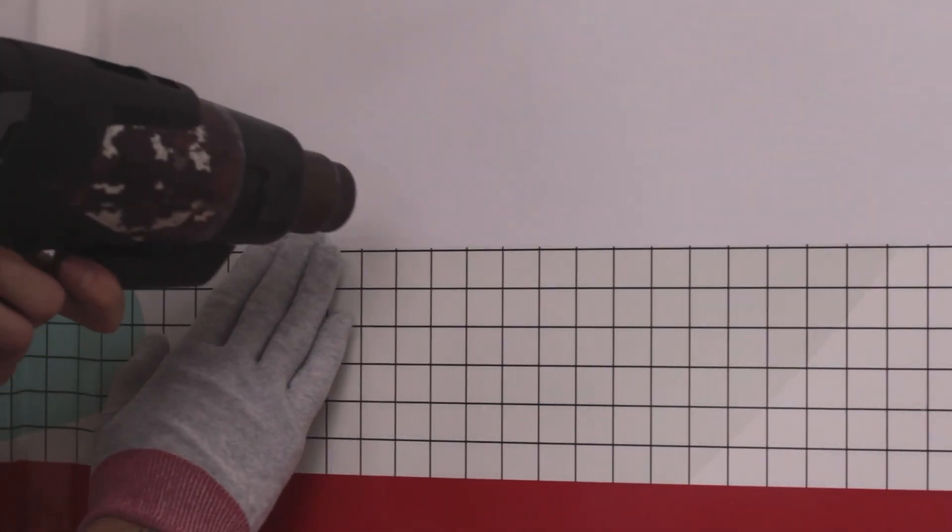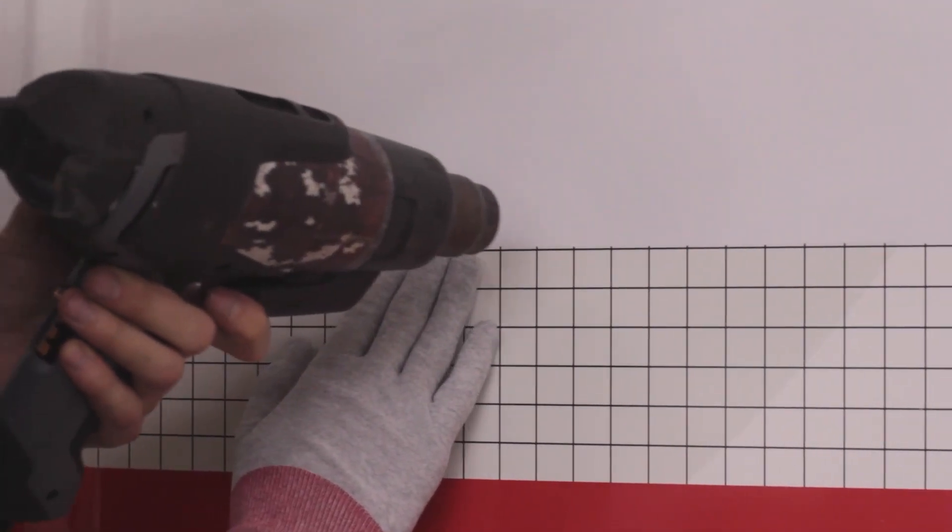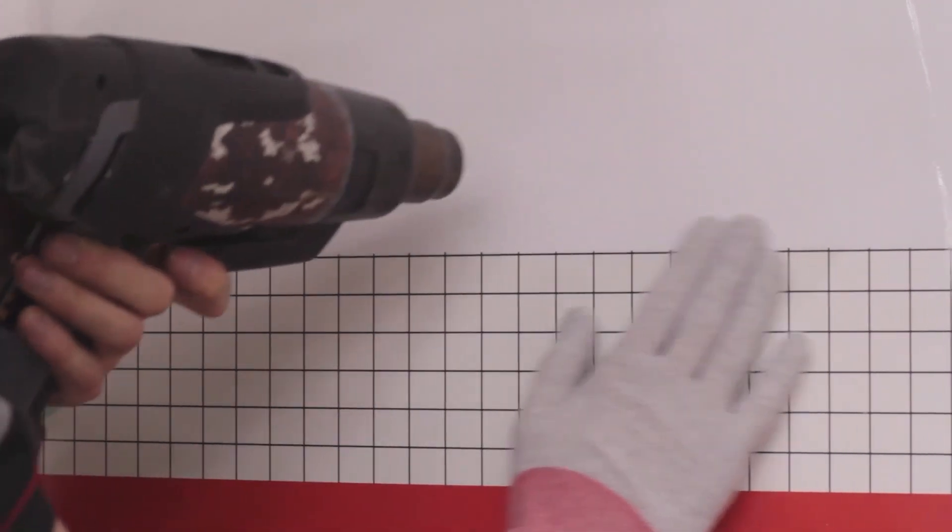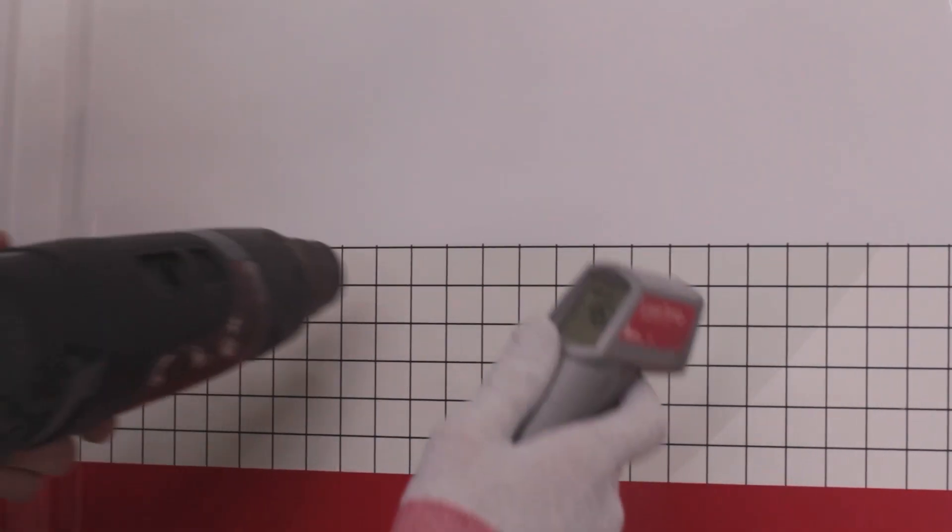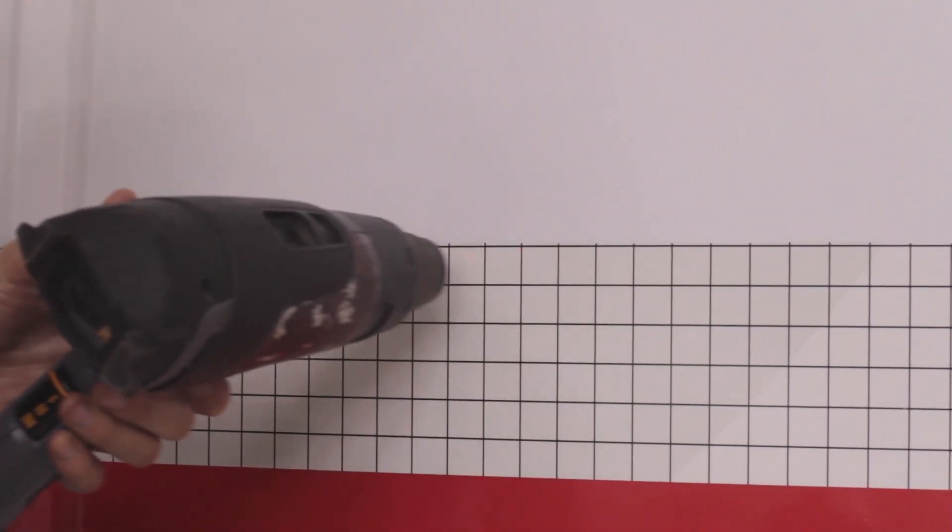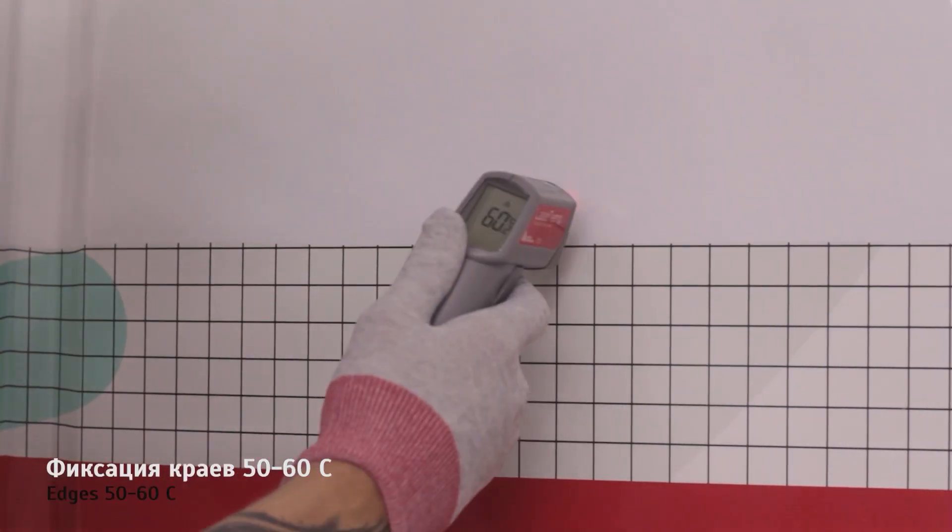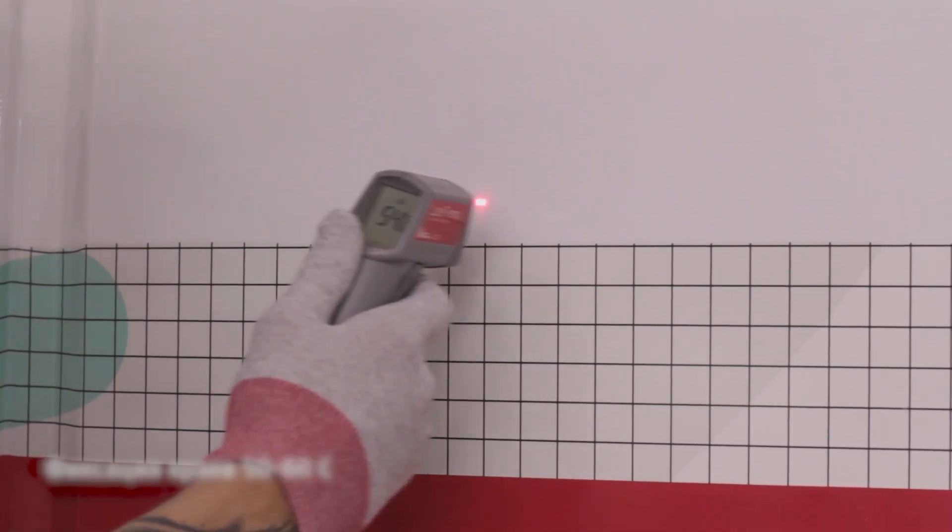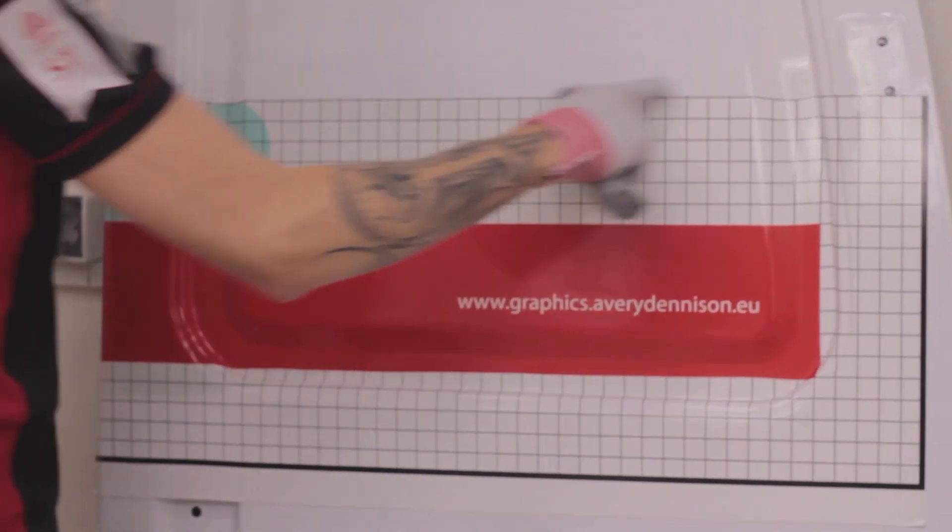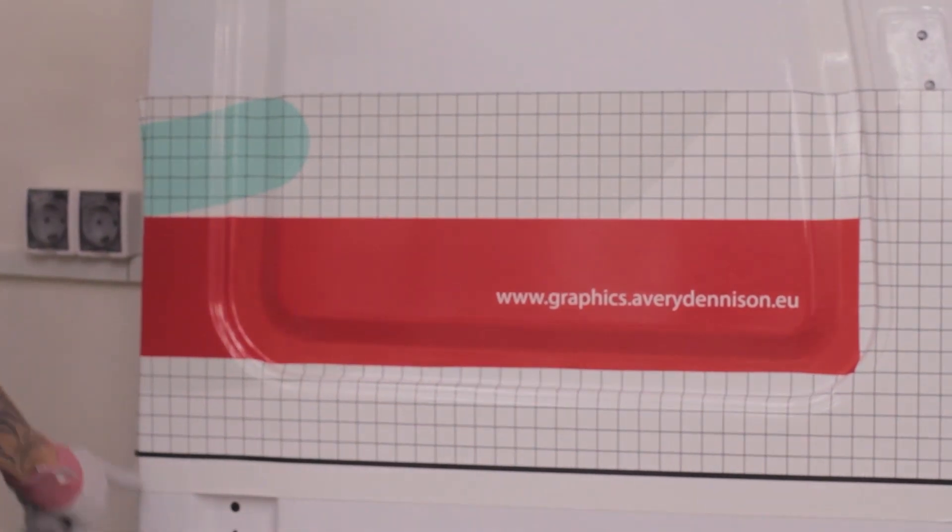We explained that post heating is required for concave areas or areas that were applied with tension on the edges. If the vinyl was applied in a flat area without tension, then we only need to finish the edges with 50-60 degrees to make sure that the edges were closed properly and won't eventually lift or peel off.